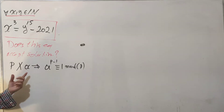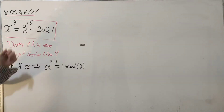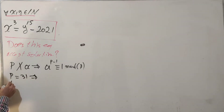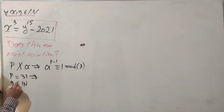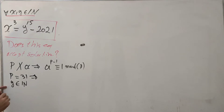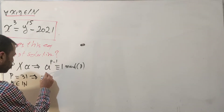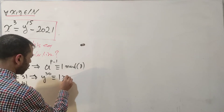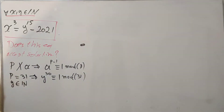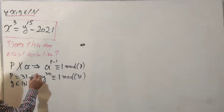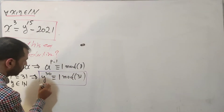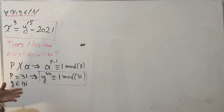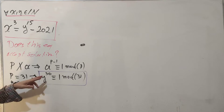So which prime are we going to use here? I'm going to set p = 31 as a prime, and y is a natural number (an integer). We'll then have y to the 30th is congruent to 1 mod 31. This is important — we look at the relationship between 6, 15, and 3.